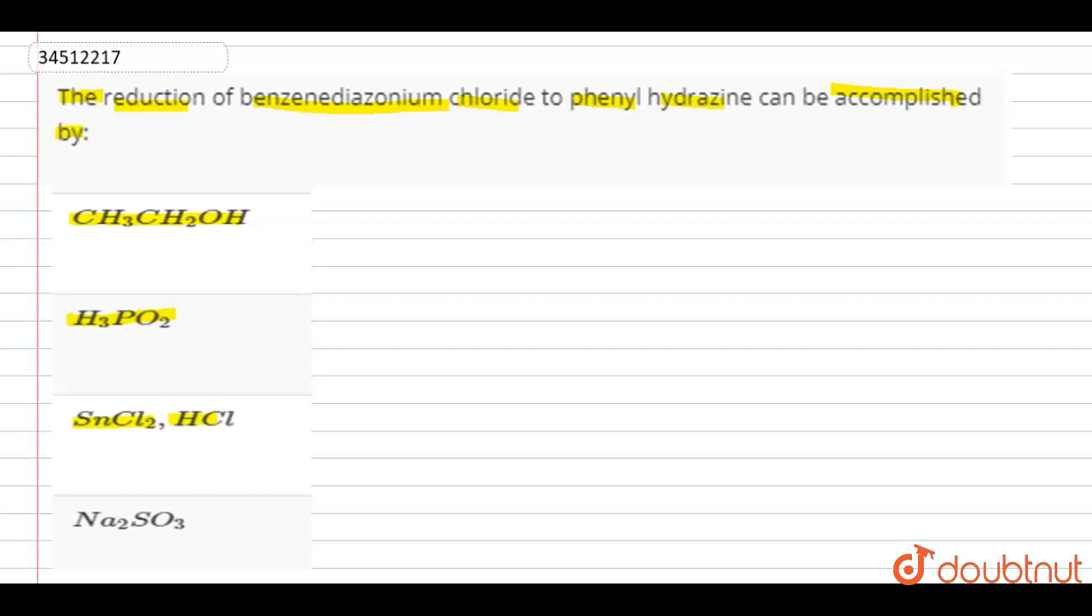Third option is SnCl2 with HCl, and fourth option is Na2SO3. So in this we can clearly see that first of all, when benzene...